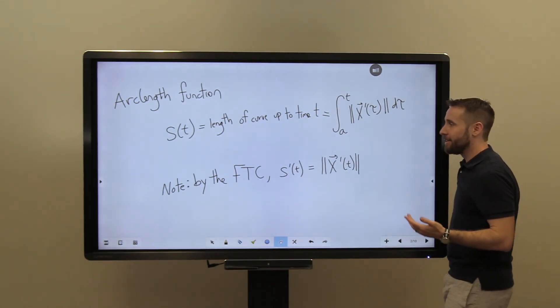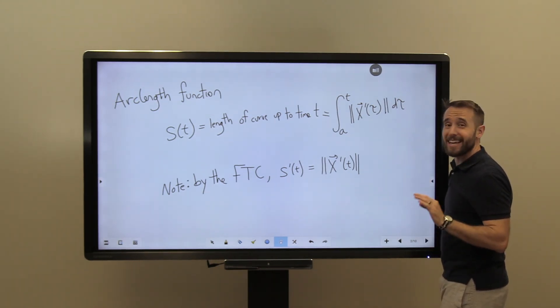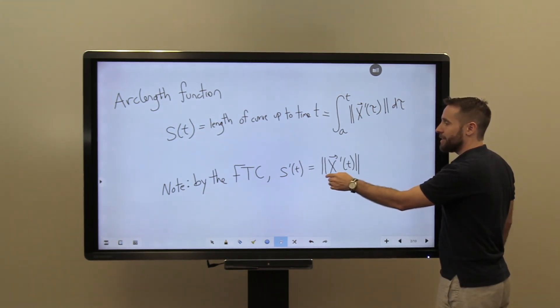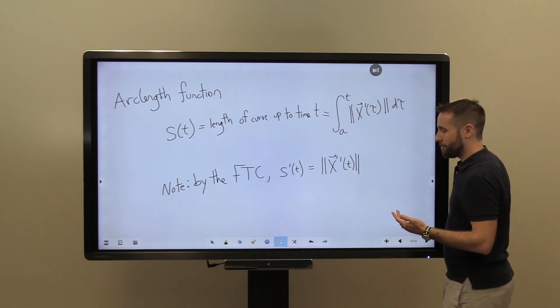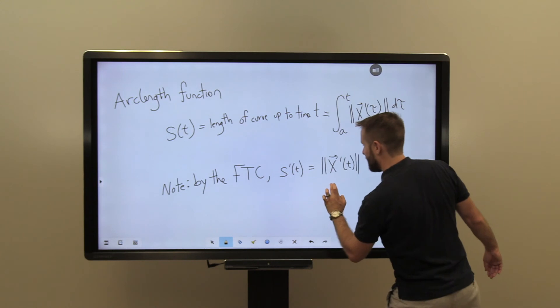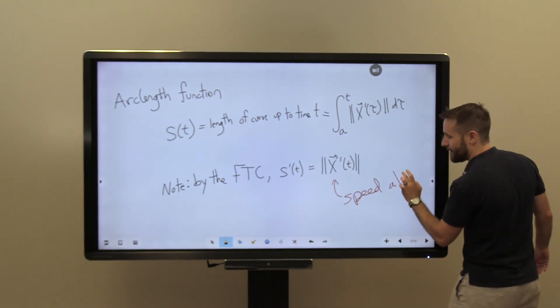So by the FTC, we have that the derivative of the arc length function, s prime, is simply the speed of the curve at that given time. So the derivative of s prime, this is just the speed at time t.